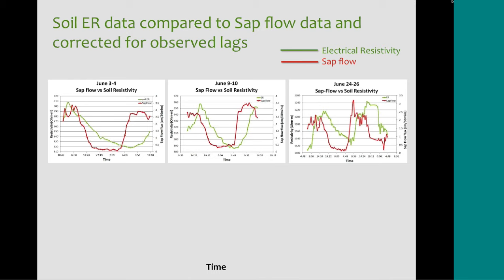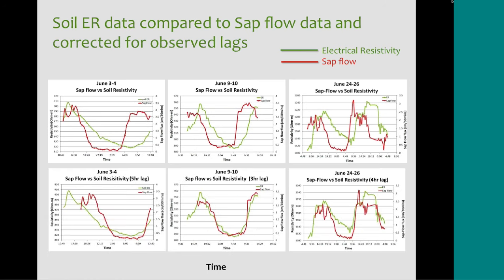We start early in the morning, around 9, and sap flow is highest during the day — that's when the tree is transpiring the most, because the sun is out and the tree is photosynthesizing. The green line shows that soil resistivity is also highest at that time, meaning there's less water in the soil. The lines don't match up exactly, so we corrected them for time lags. Once corrected, we saw a higher correlation, ranging between 0.86 and 0.95 correlation coefficient, which represents a strong positive correlation — where 1 is the ideal maximum.